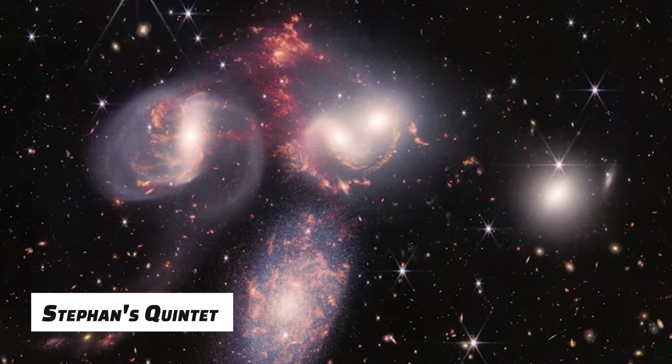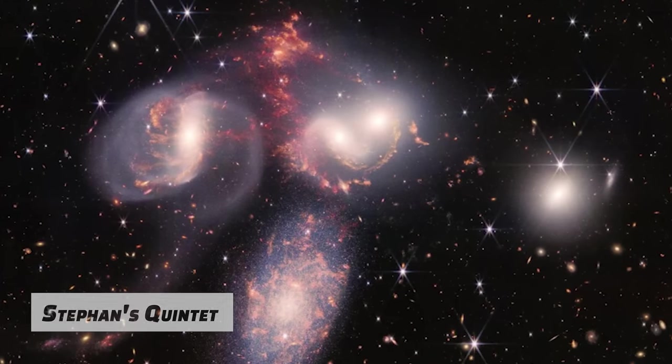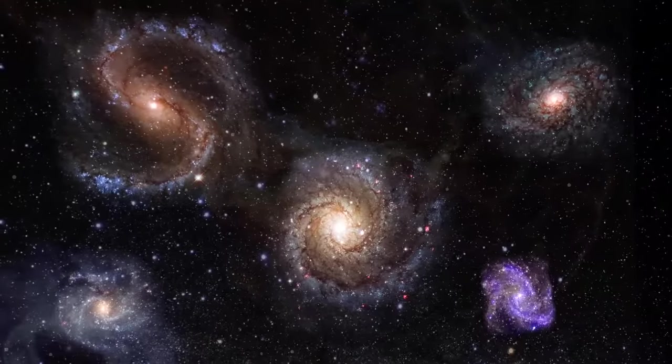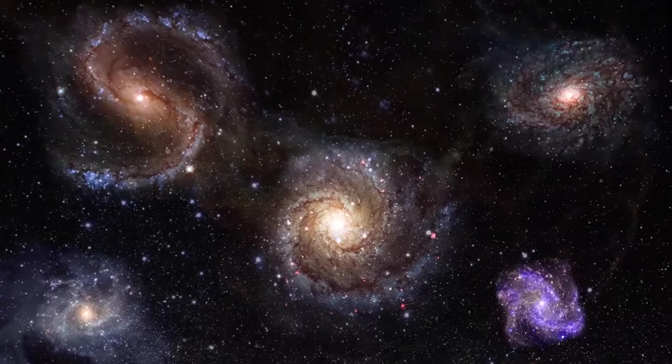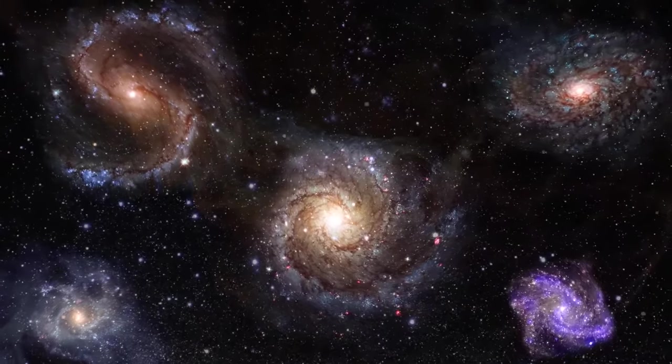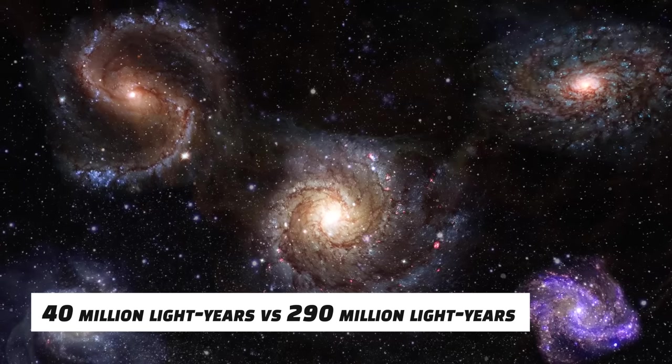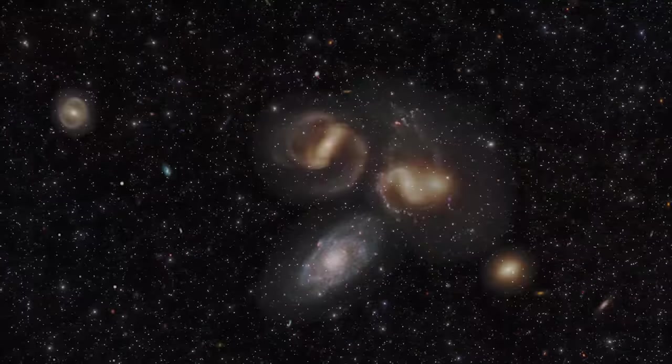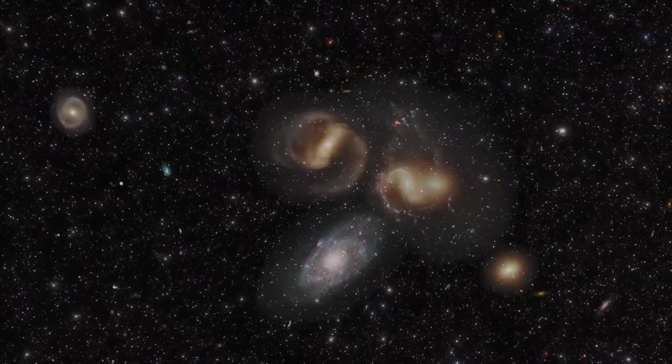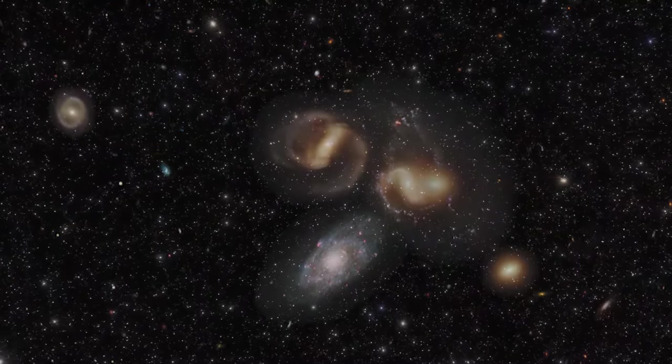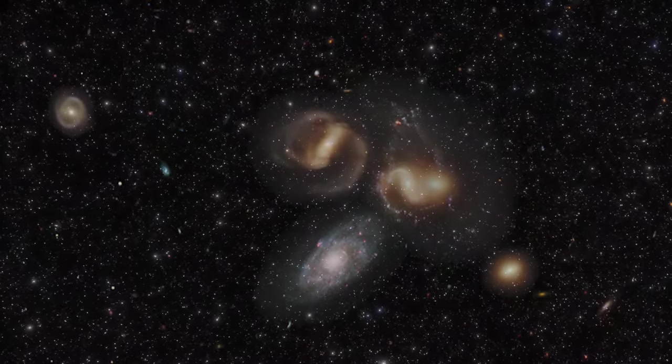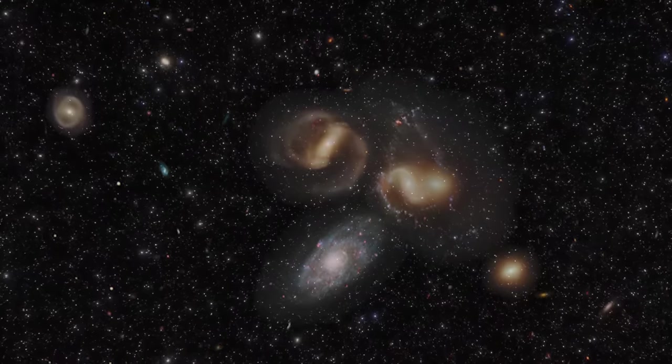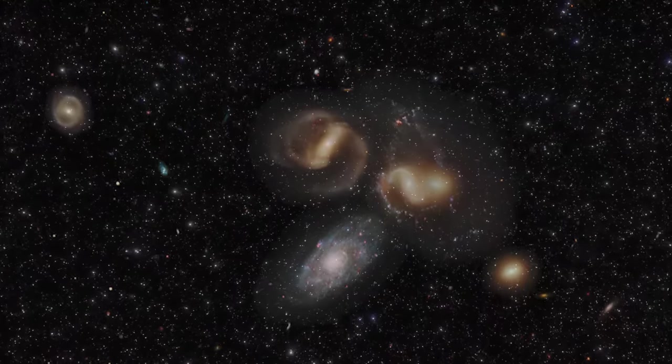A massive mosaic depicting Stephen's Quintet, a collection of five galaxies. Despite the fact that the leftmost galaxy is significantly closer to Earth than the others, 40 million light-years versus 290 million light-years, the grouping is nonetheless impressive. The creation of this image, acquired by Webb's NIRCam and MIRI, needed more than 150 million pixels and 1,000 image files.